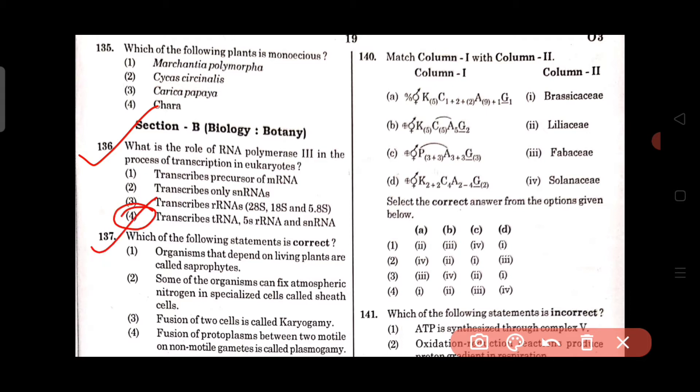Question number 137: Which of the following statements is correct? Options are organisms that depend on living plants are called saprophytes, some organisms can fix atmospheric nitrogen in specialized cells called seed cells, fusion of two cells is called karyogamy, and fusion of protoplasms between two motile or non-motile gametes is called plasmogamy. The correct statement is option number 4, fusion of protoplasm between two motile or non-motile gametes is called plasmogamy.